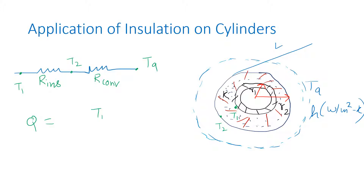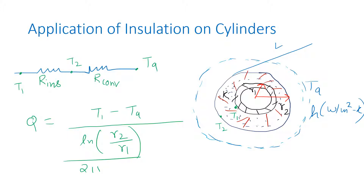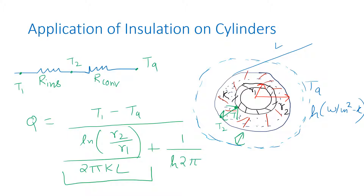We all know the heat transfer equation in the case of a cylinder: q = (T1 - T_a) / [ln(r2/r1) / (2πkL) + 1/(h·2πr2·L)]. The term ln(r2/r1)/(2πkL) shows the resistance offered by insulation, where heat transfer takes place due to conduction. The term 1/(h·2πr2·L) is the convective resistance, since 2πr2·L is the surface area of the cylinder.